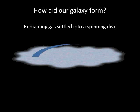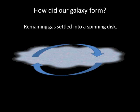Later, the remaining gas settled into a flattened spinning disk as it contracted under the force of gravity. Collisions among the gas particles averaged out the random motions, leading them to acquire orbits in the same direction and in the same plane. Stars that formed within the spinning disk make up the disk population of stars.